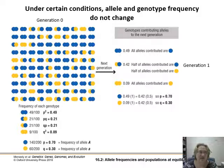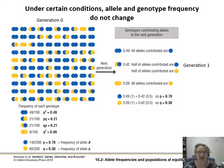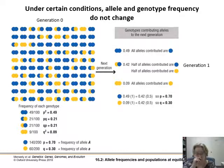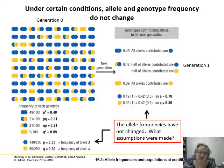Under certain conditions, allele and genotype frequency don't change — like if you just have a super stable population with nothing occurring: no immigration, no sexual selection. This is sounding like Hardy-Weinberg equilibrium. You don't have any changes; the population just keeps shuffling genes together, everybody's breeding, there's no sexual selection — just shuffle, shuffle, like a deck of cards, and you get the same thing every generation. This is when nothing exciting is going on, aka no evolution — your allele frequencies don't change.